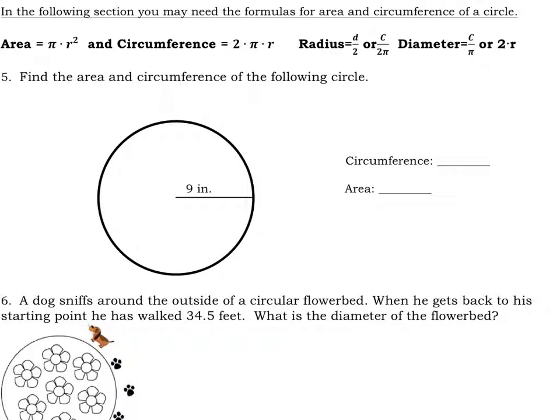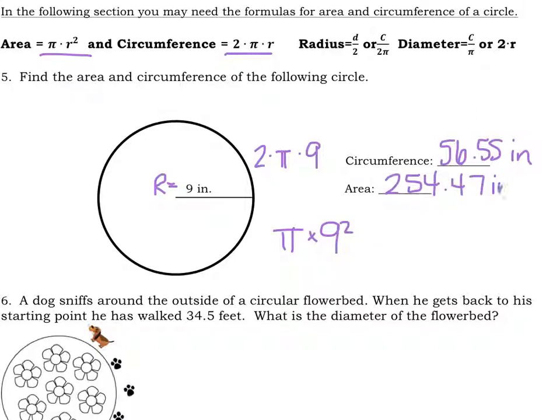Moving on, we're going into circles now. Here we have to find the area and circumference of the circle. They give us the formulas. Note, you will need to have them memorized for your summative though. We're given that the radius equals 9. So if radius equals 9, we can find our circumference. Circumference is 2 times pi times our radius of 9. And then we get 56.55 inches. Area, pi r squared. Pi times 9 squared, or 81, which gives us 254.47 inches squared.